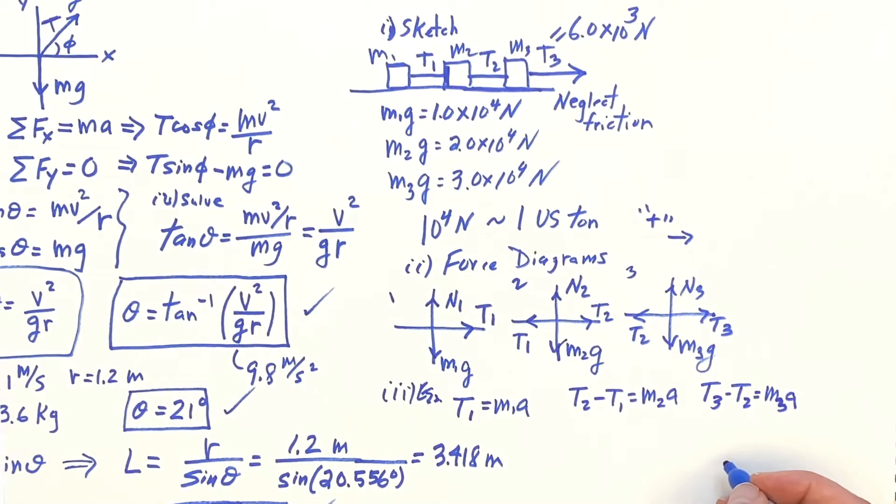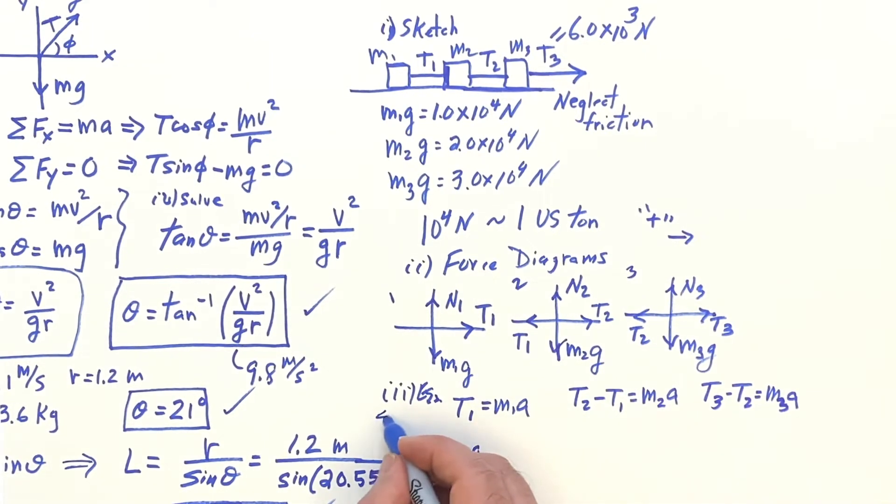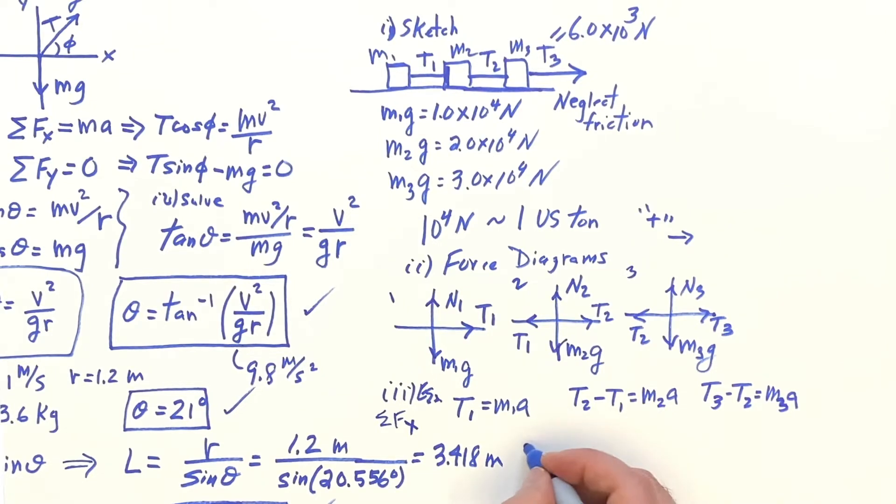And T3 minus T2 is M3A. Don't really need the normal equations. Just need, these are the sum of the forces in the Y, and these are the sum of the forces in the X direction. So, once we have this set up, we can now solve, add all the equations.